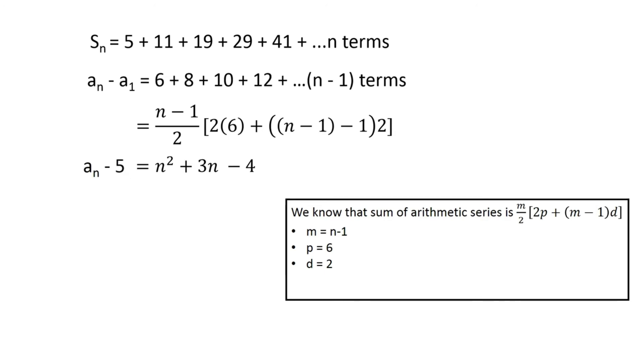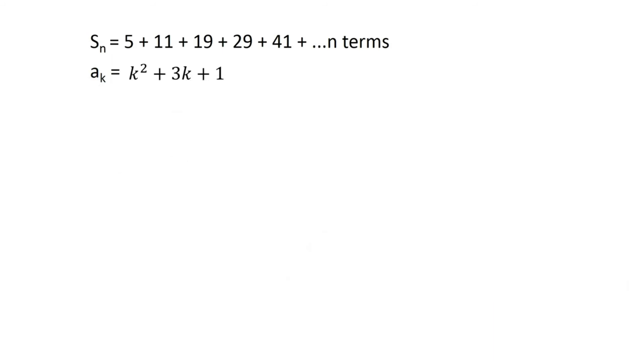Substituting the value of a1, we get an equals n² plus 3n plus 1. So in general, for any kth term, we can write ak equals k² plus 3k plus 1.